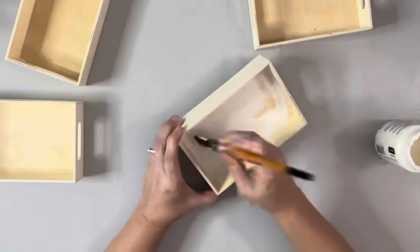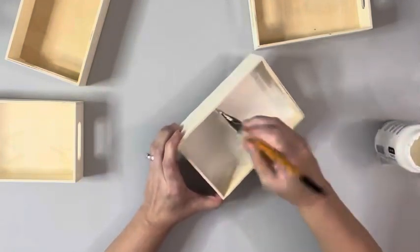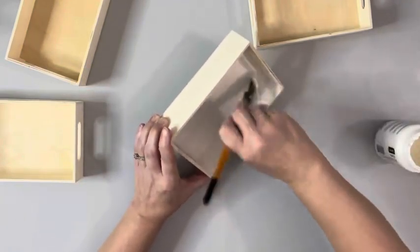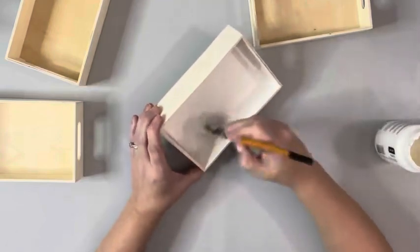Then I painted all four trays with Cottage White Chalk Paint by Folk Art, painting everything but the sides of the trays on the outside, and gave the rest of it two coats.